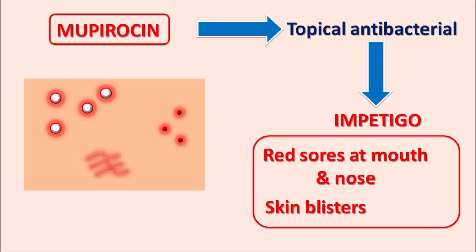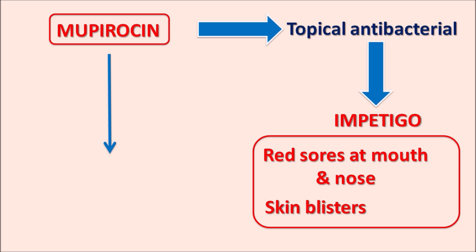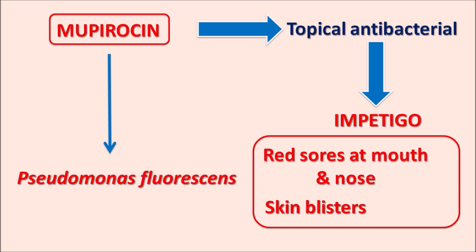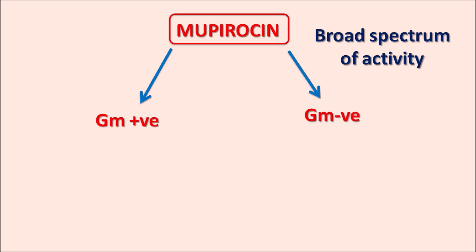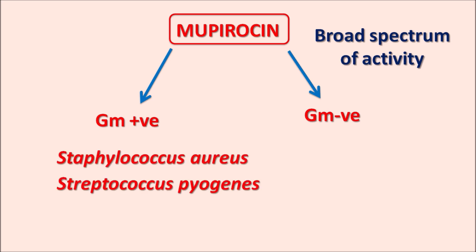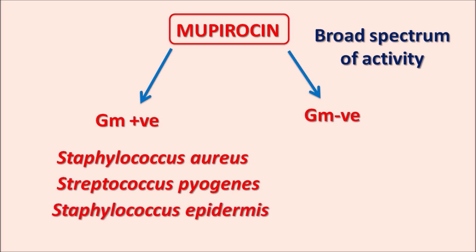All these conditions can be treated by the topical antibacterial mupirocin. Mupirocin is a natural antibacterial agent obtained from Pseudomonas fluorescens, and was previously also known as pseudomonic acid A. It has broad spectrum activity, effective against both gram-positive and gram-negative infections, but clinically it is indicated against gram-positive bacteria causing skin infections — particularly Staphylococcus aureus, Streptococcus pyogenes, and Staphylococcus epidermidis.